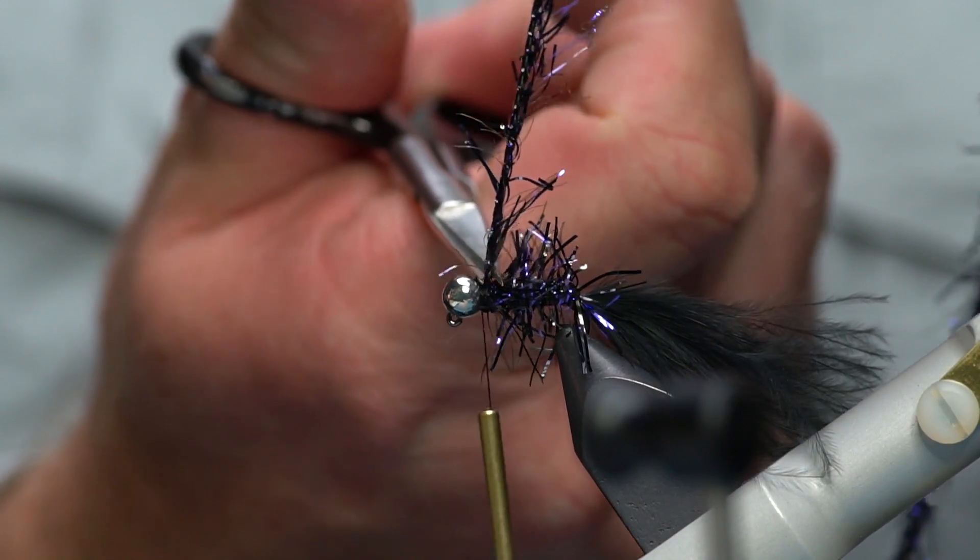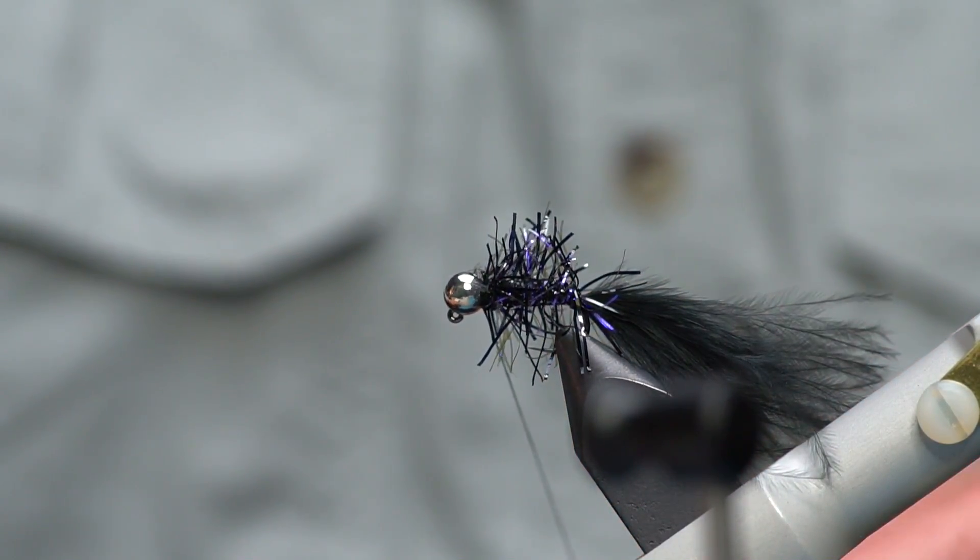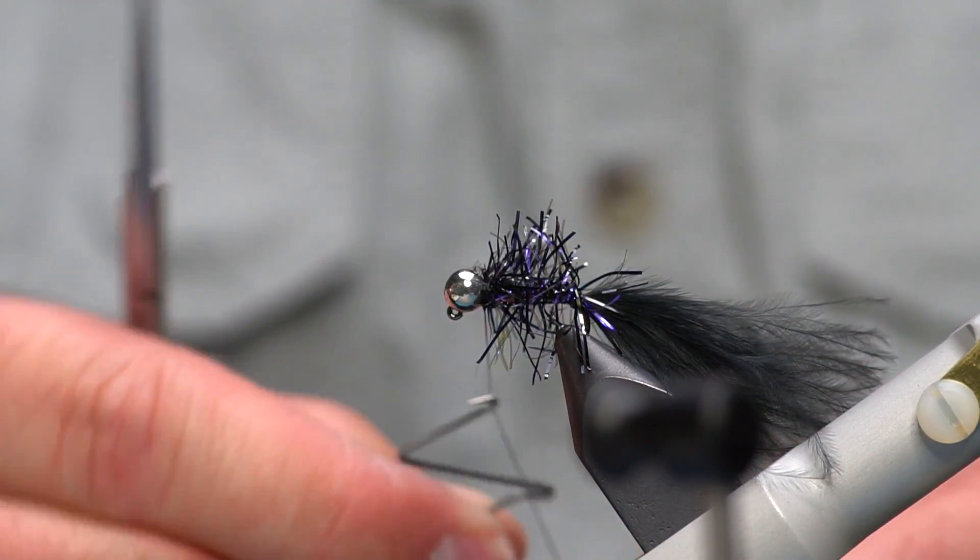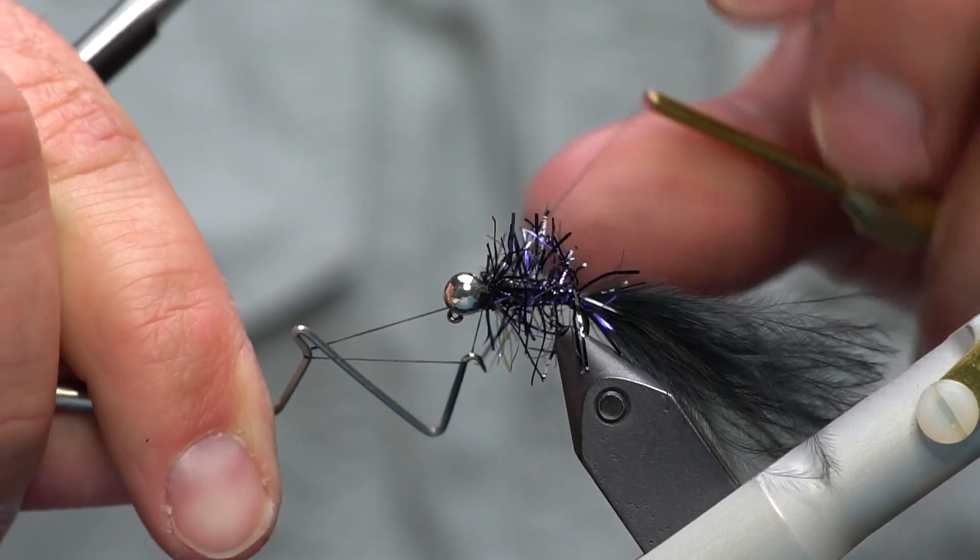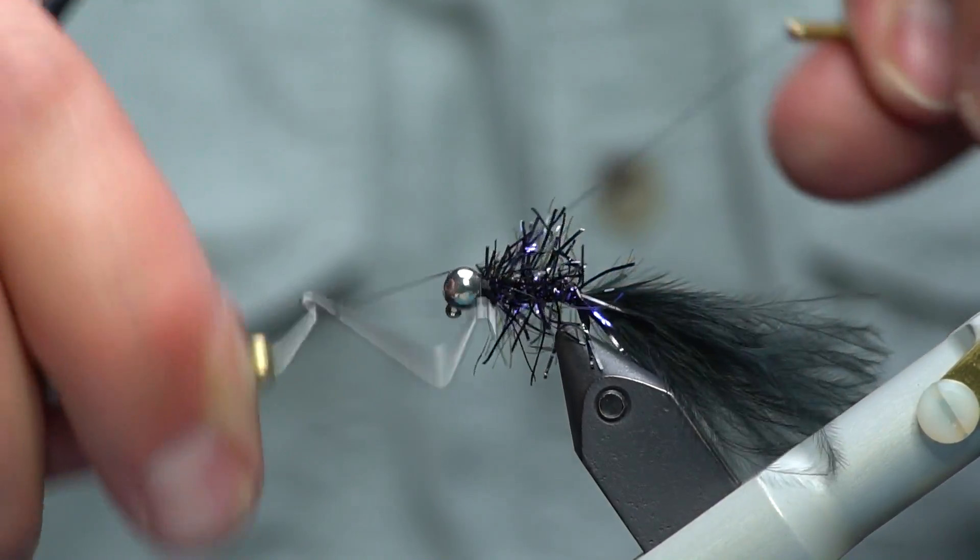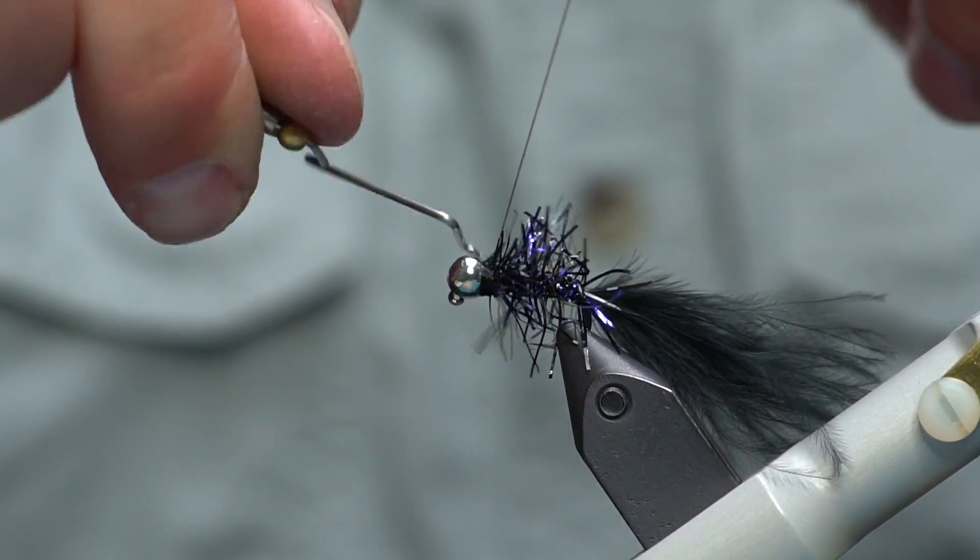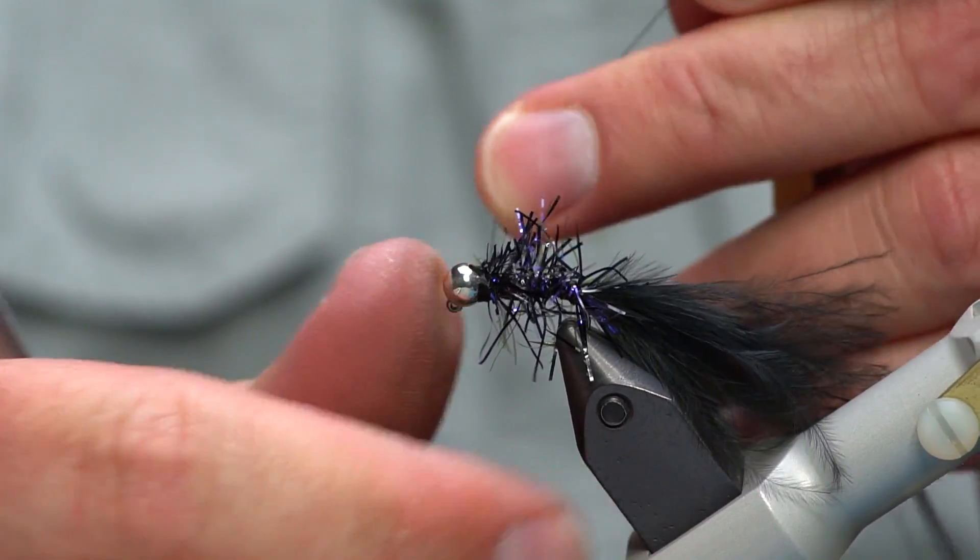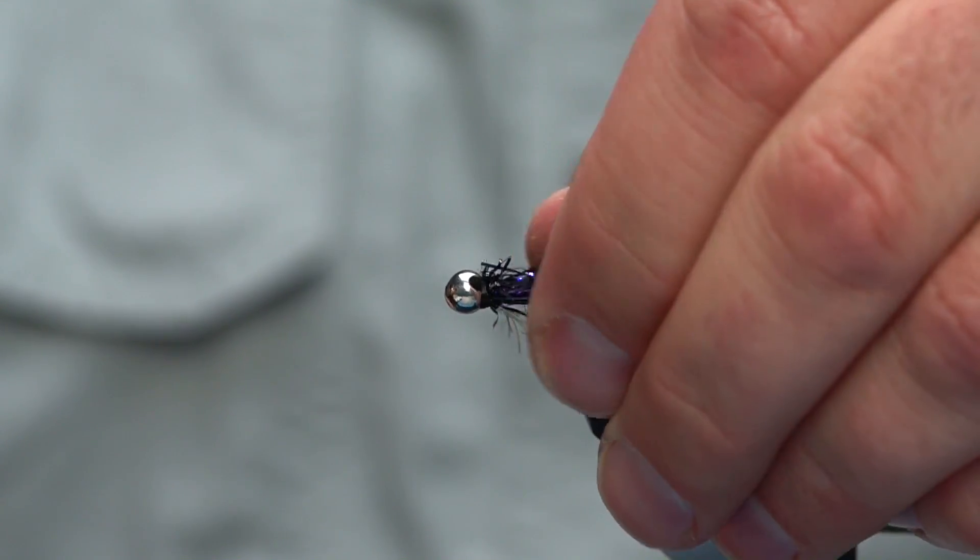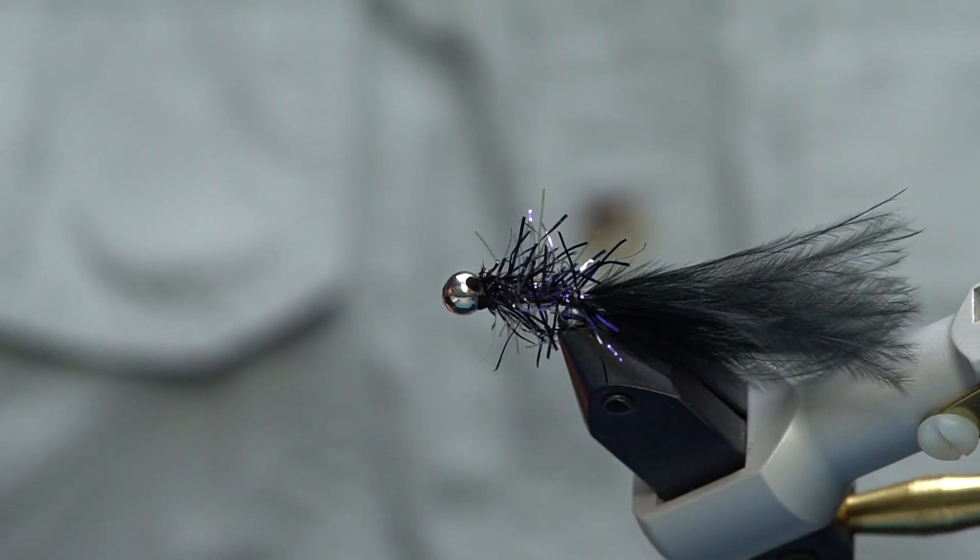Tie it off, get rid of the excess and then you won't believe it, this is too easy. Now we're just going to whip finish and like all flies it's a good idea to add a little bit of head cement on the thread.